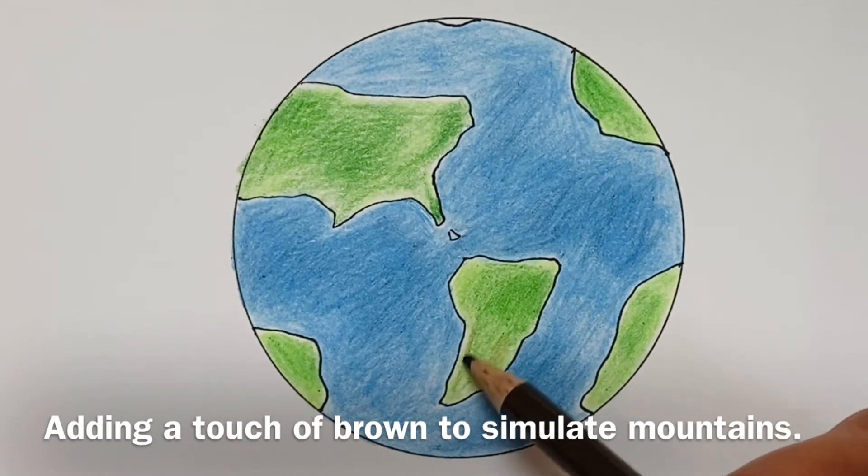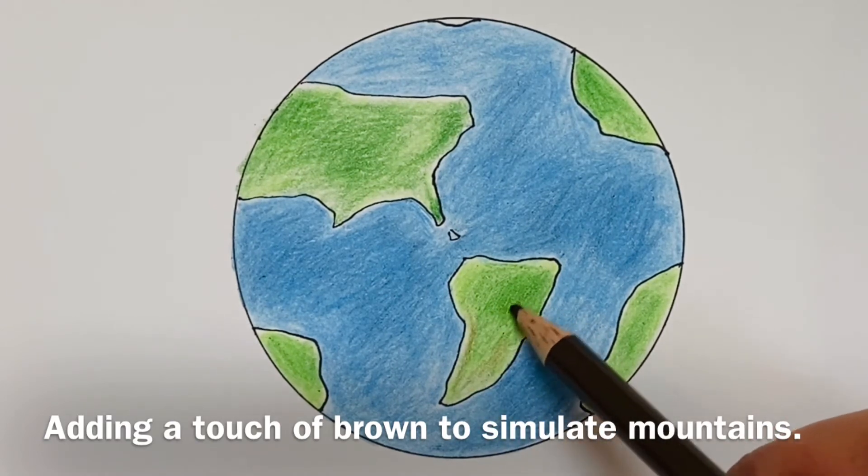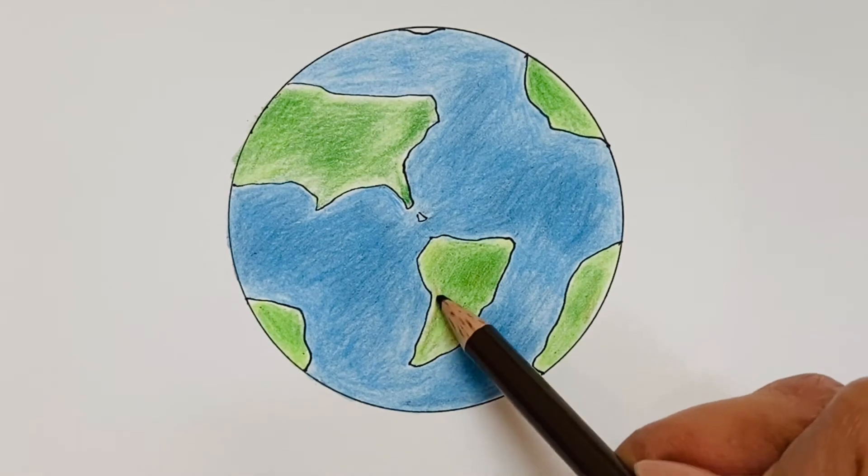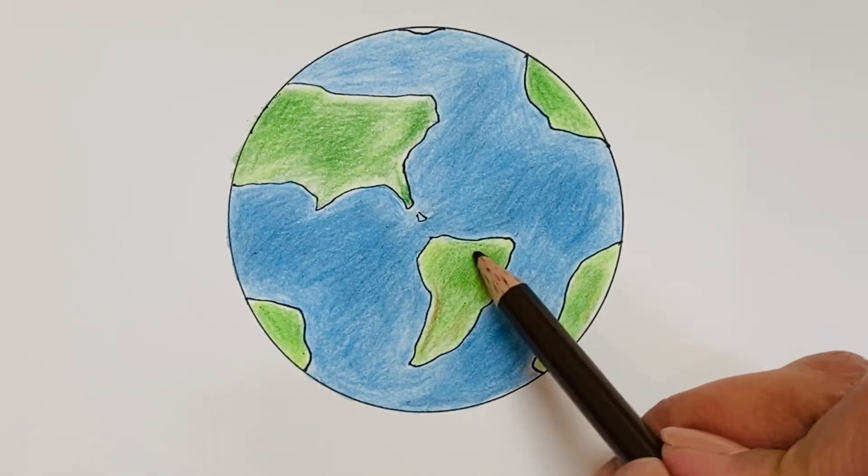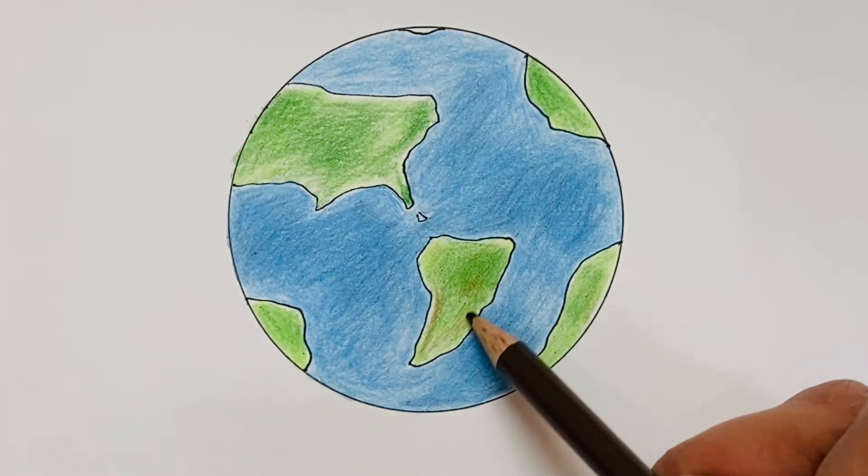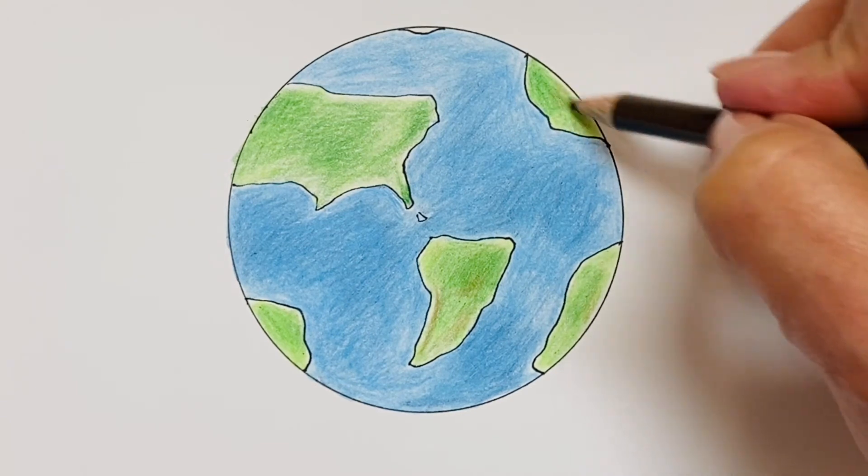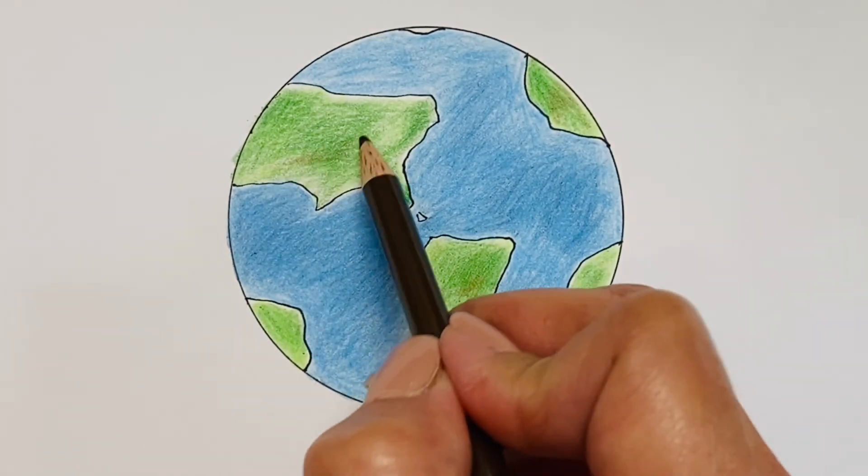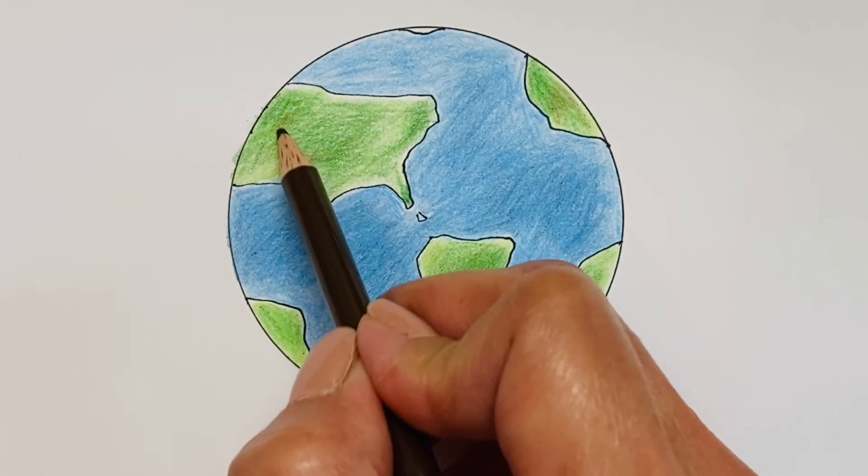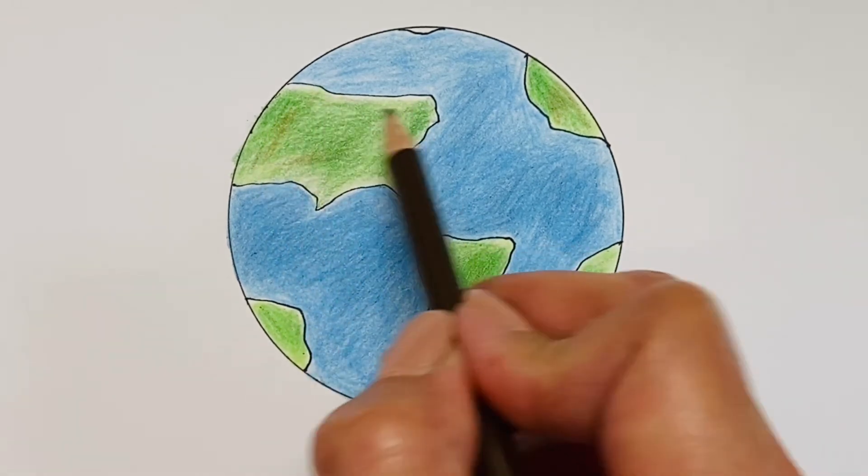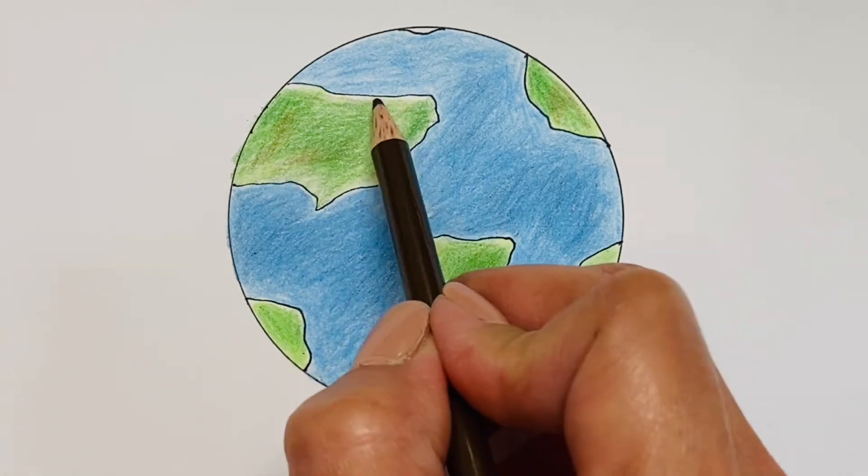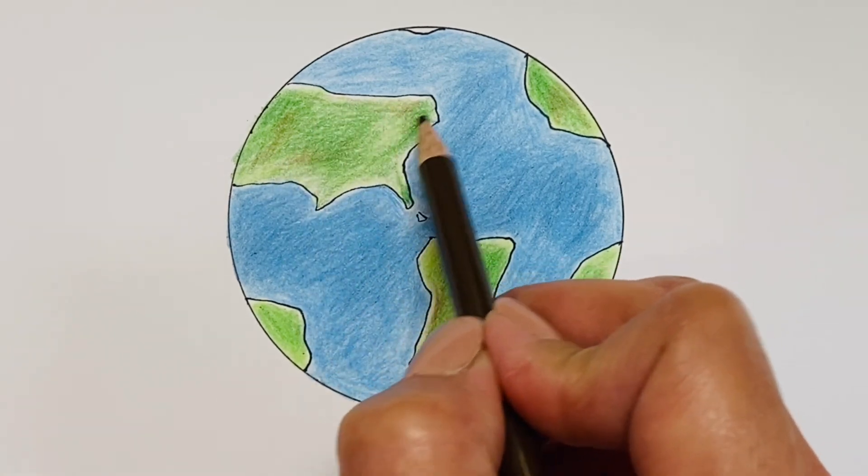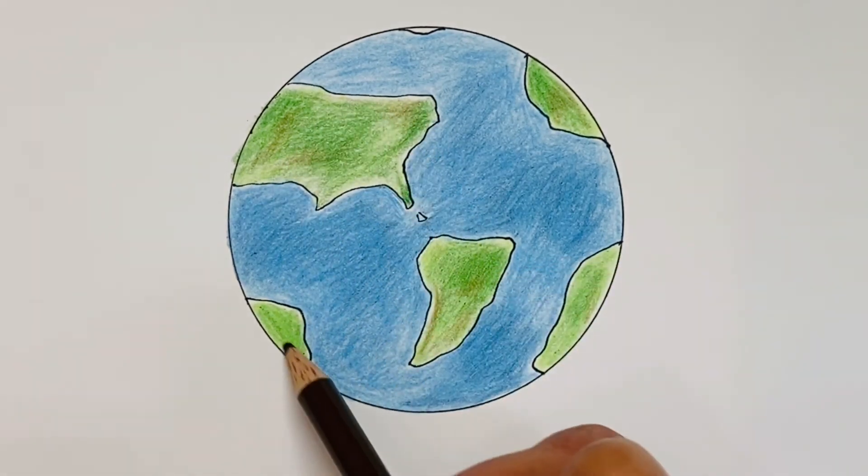So now I'm using a brown to simulate mountains. I'm pretending I'm looking at the earth from outer space and I see little mounds of earth. The continents also have different variety of colors, so just pretend you see mountains from outer space and put in a teeny tiny bit of brown on your continents to give it that extra touch.